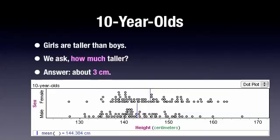Another way of looking at it is to look at the ratio of means. If we do that, we can see that the girls are about two percent taller. That's three centimeters than 150. 150 centimeters, by the way, is a little under five feet.